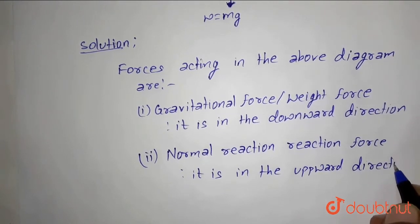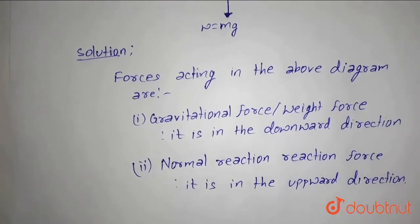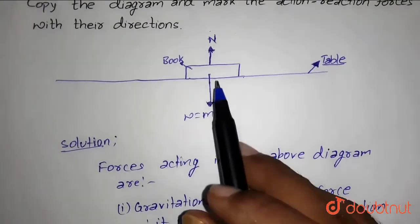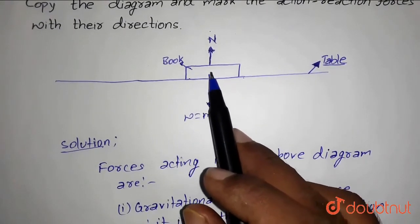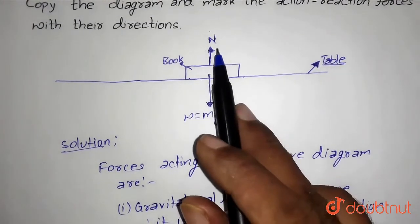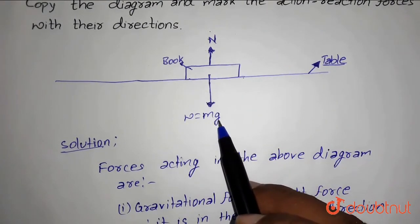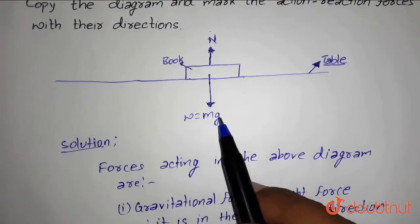Both the forces will be equal because the book is not in motion, which means the net force on the book is zero. So the normal reaction force will be equal to the gravitational force, or we can say weight force, in this particular question.